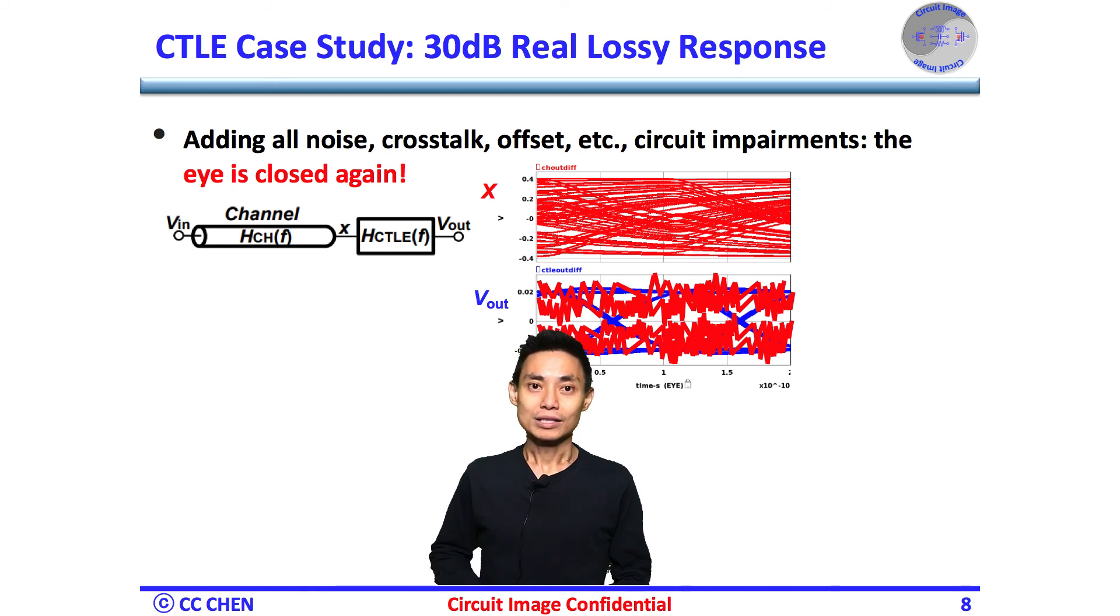Of course, in the simulation, we can add all those circuit impairments into the simulation. But the simulation time could be too long to simulate all cases in a reasonable time. So if we know what the worst case noise, crosstalk, offset should be, we can simply add those impairments on top of required eye and determine if the final eye is good enough or closed. Does that make sense to everyone?